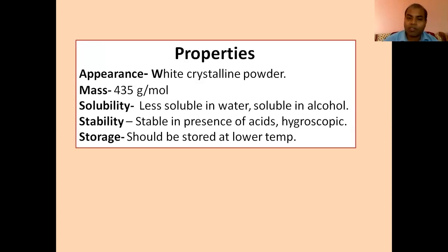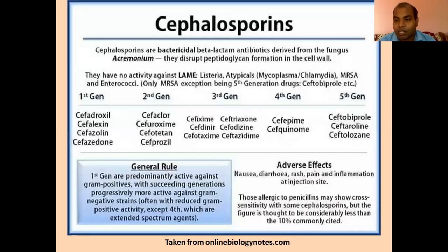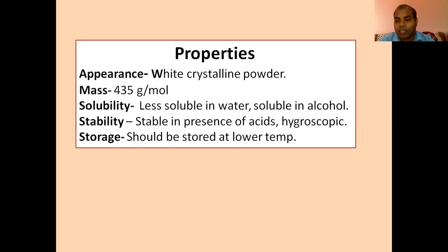In terms of properties, cloxacillin is a white microcrystalline powder having a molecular mass of 435 grams per mole. Its solubility profile is similar to methicillin — less soluble in water but soluble in alcohol. However, it is hygroscopic and should be stored in a tight container at low temperature to avoid water penetration or water absorption.